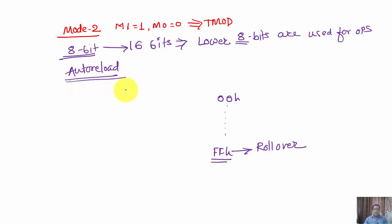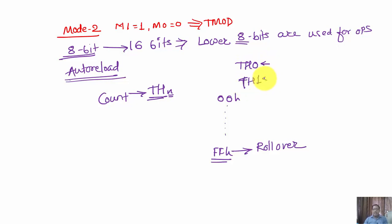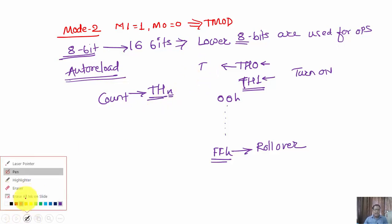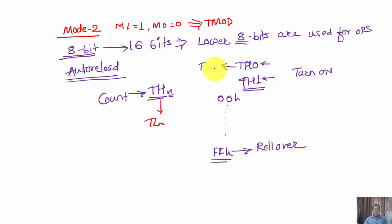The concept of auto reload is: whatever count value is set, it is copied into the higher 8 bits of the selected timer. If using Timer 0, the count value is loaded into TH0; if using Timer 1, it is loaded into TH1. The moment the timer is turned on, the value in the higher 8 bits is automatically loaded into the lower 8 bits — TH0 into TL0, or TH1 into TL1.